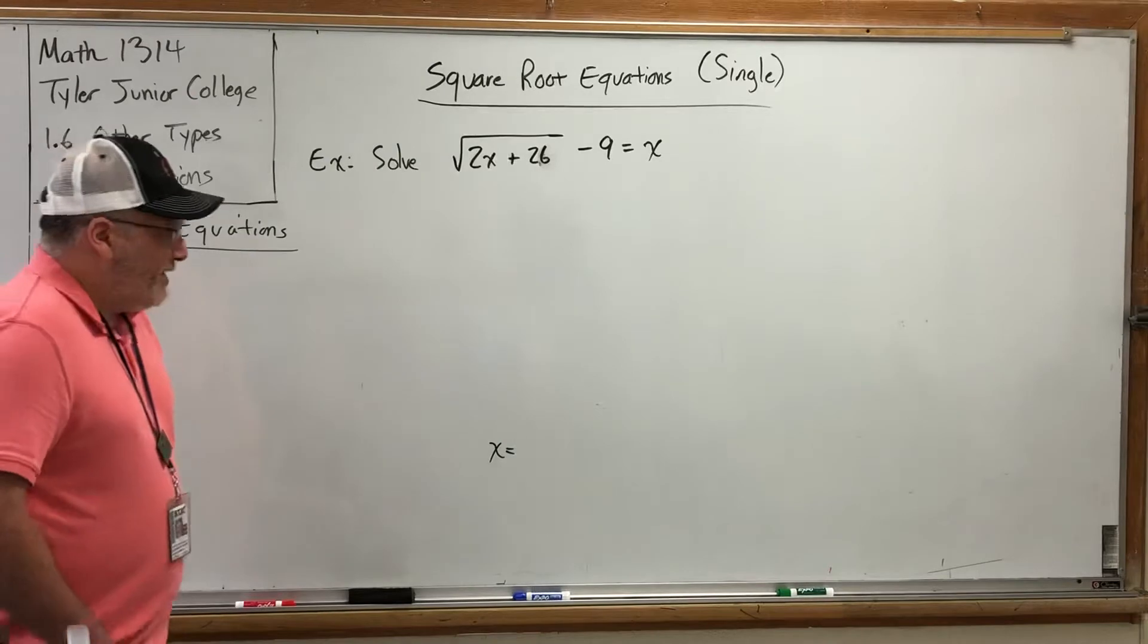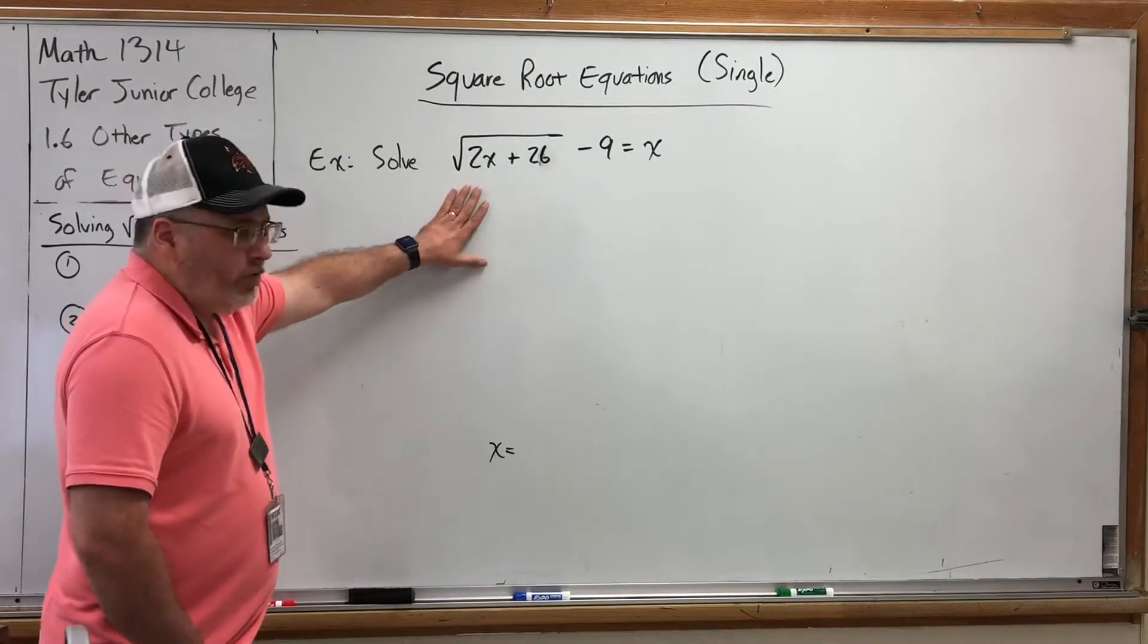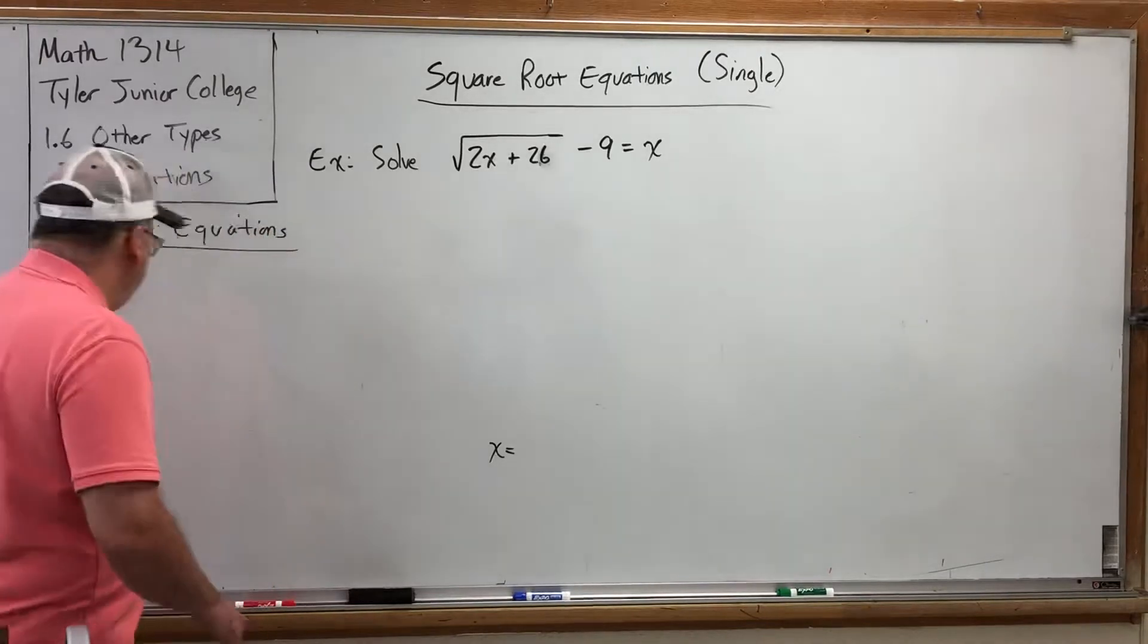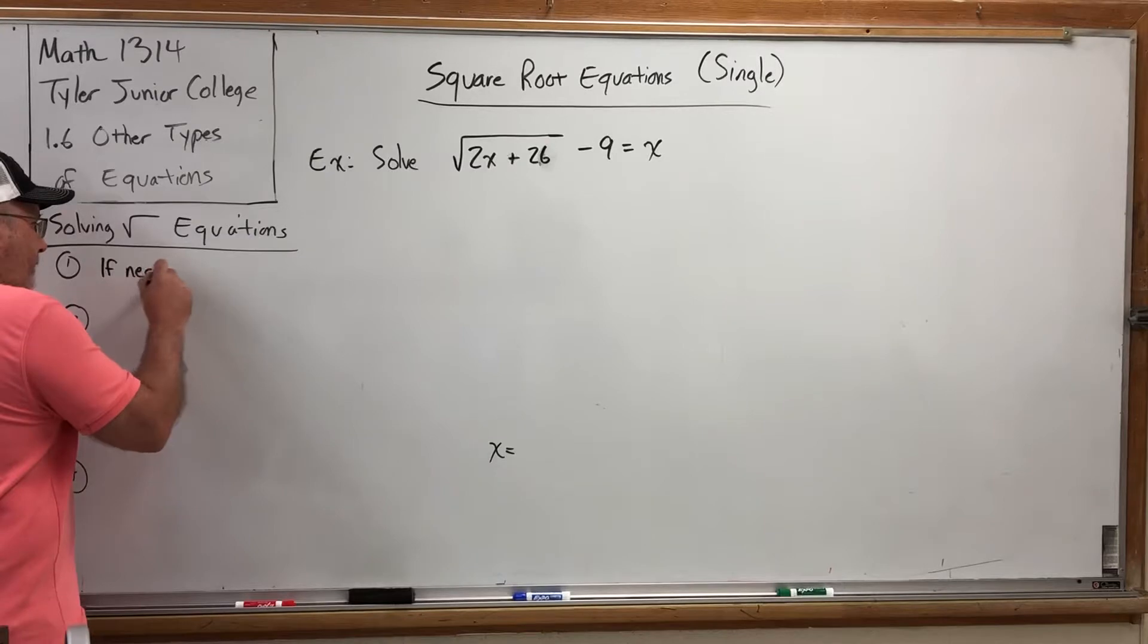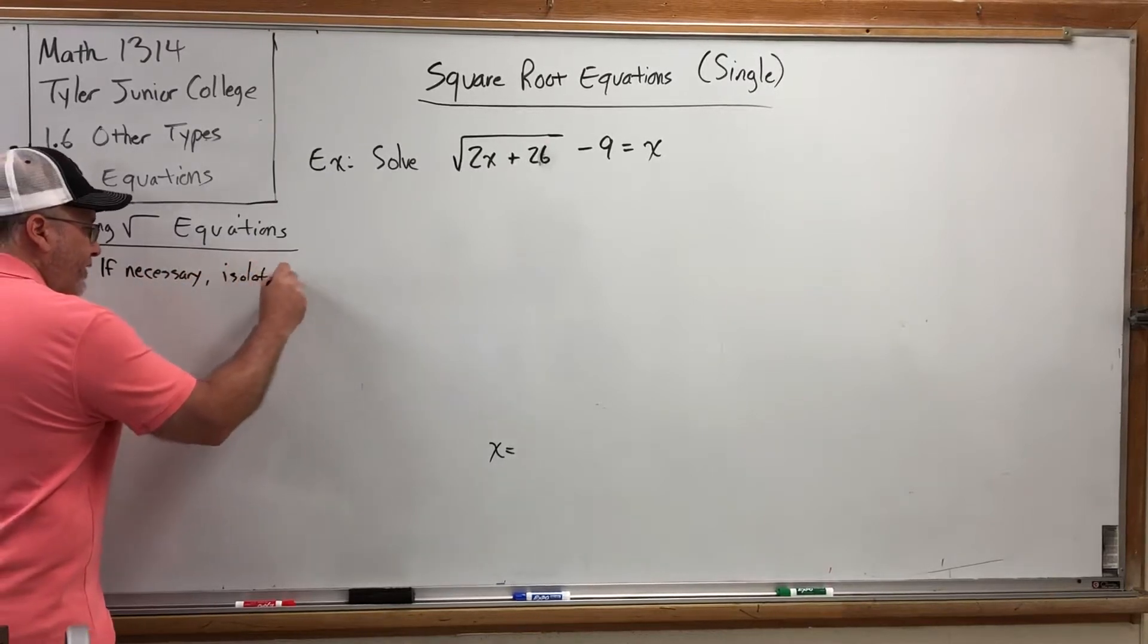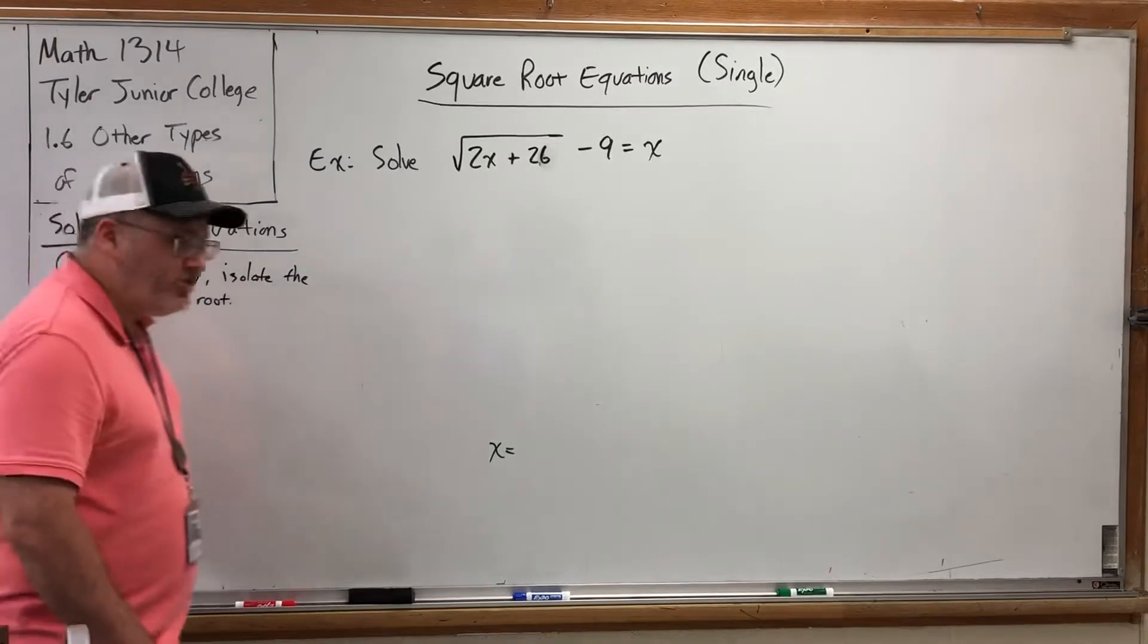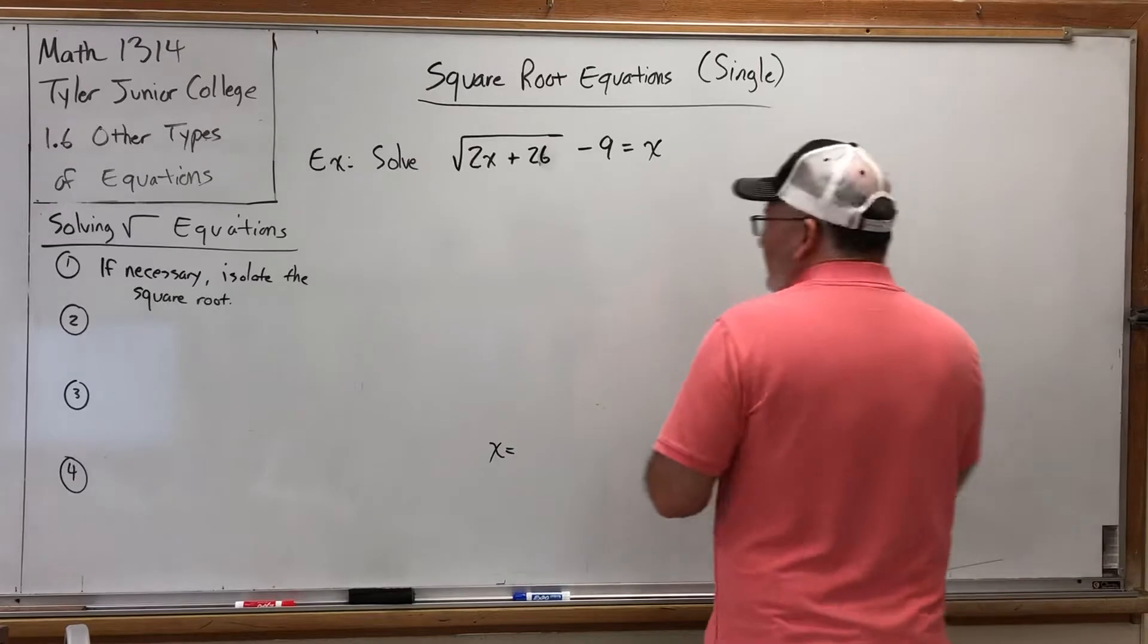So let's focus on the biggest obstacle, which is the square root. I'd like to make this square root go away. So I'm going to have to do something to it to make it disappear. But before I do that, I have to isolate it. So your first move, if necessary, isolate the square root. Meaning if there's any numbers outside of the square root or anything outside of the square root, get rid of that first.